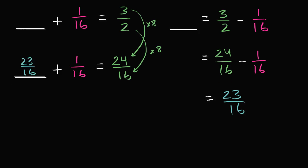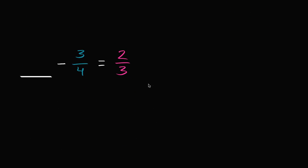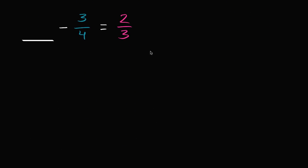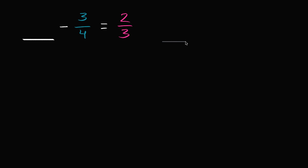Let's do another example. This one is a little bit different. I have blank minus 3/4 is equal to 2/3. There are a couple of ways to think about it. If blank minus 3/4 is equal to 2/3, one way to think about it is: blank is going to be the same thing as 2/3 plus 3/4.